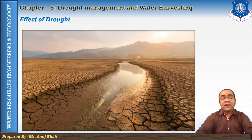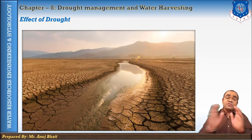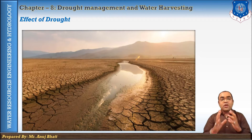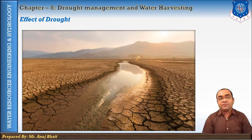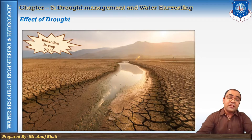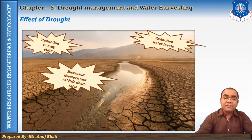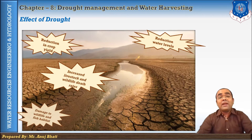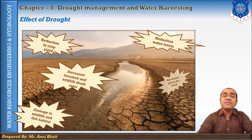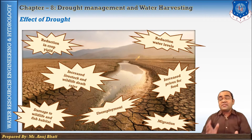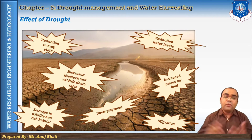Drought produces a large number of impacts that affect social, environmental, and economic standards of living. Its effects spread far beyond the physical effect of drought itself. Water is integral to producing goods and providing services. Some direct consequences of drought are reduction in crop yield, reduction in water levels, increased livestock and wildlife death rates, damage to wildlife and fish habitat, increased prices for food, unemployment, and migration.